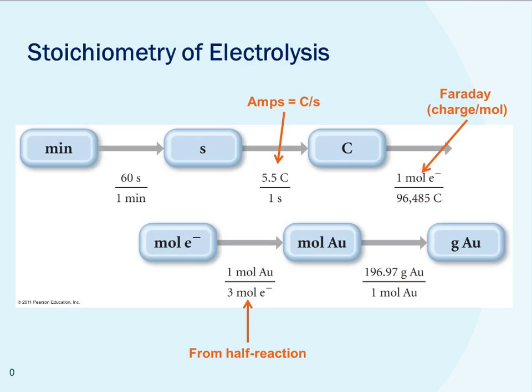So what we look at is we have our 60 seconds, and we know our current, which usually we're given a time and a current and we're figuring out the mass, or we're given the mass and working in reverse. But we can use these relationships. This is a constant. We can get this from the amp, coulombs per second, and then we get this from the half reaction, and then this of course from the periodic table.